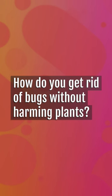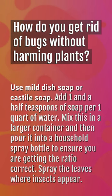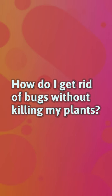How do you get rid of bugs without harming plants? Use mild dish soap or castile soap. Add one and a half teaspoons of soap for one quart of water. Mix this in a larger container and then pour it into a household spray bottle to ensure you are getting the ratio correct. Spray the leaves where insects appear.